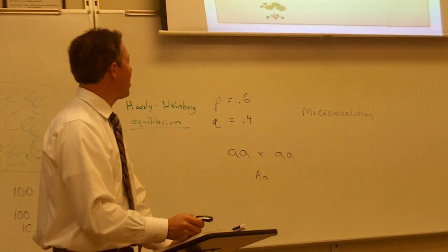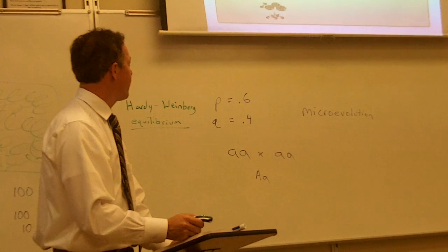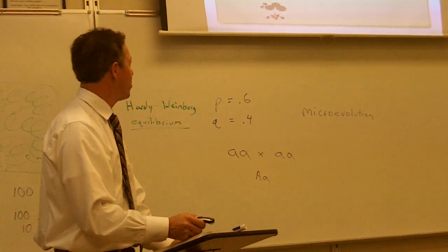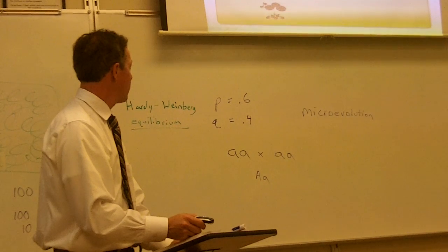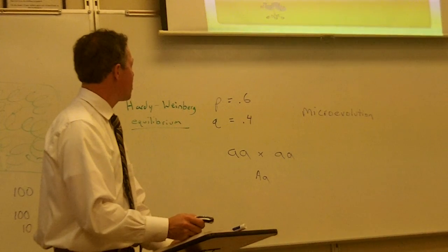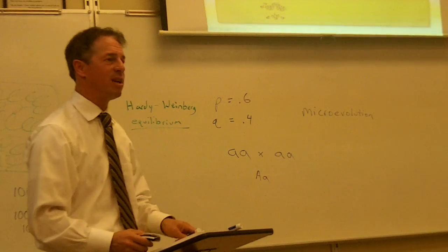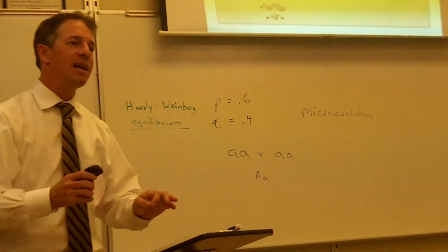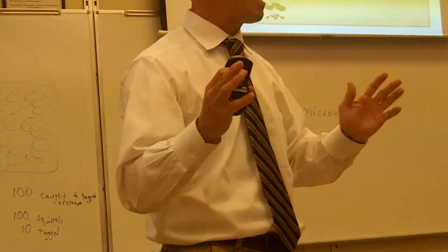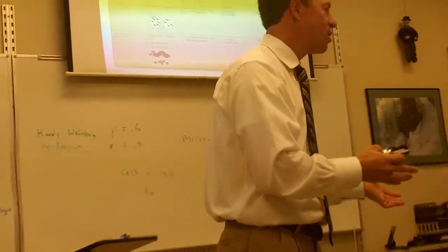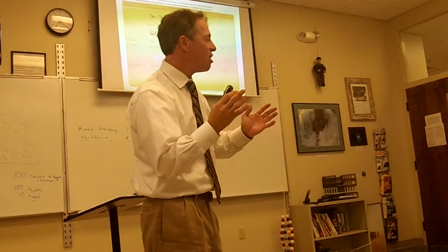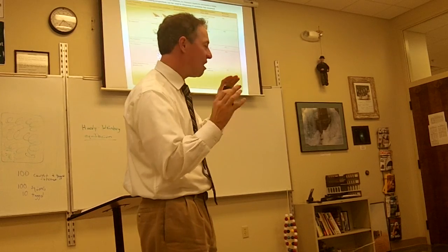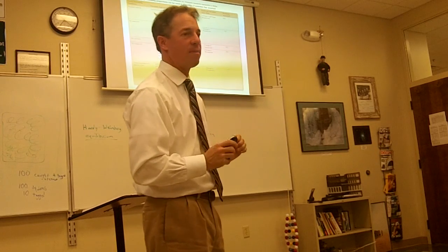And you have to have a large population too. You can't have any genetic drift. So I'm going to talk about what this last one means, what genetic drift means. Genetic drift is random changes that happen to a population. Sometimes it's random, sometimes it's not. Changes that happen to a population, and it especially affects small populations.